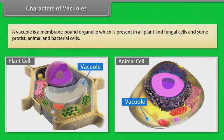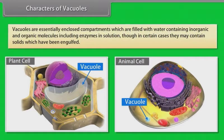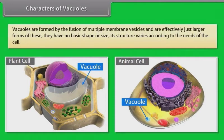A vacuole is a membrane-bound organelle which is present in all plant and fungal cells and some protist, animal, and bacterial cells. Vacuoles are essentially enclosed compartments filled with water containing inorganic and organic molecules, including enzymes in solution, though in certain cases they may contain solids which have been engulfed. Vacuoles are formed by the fusion of multiple membrane vesicles and are effectively just larger forms of these. They have no basic shape or size; their structure varies according to the needs of the cell.